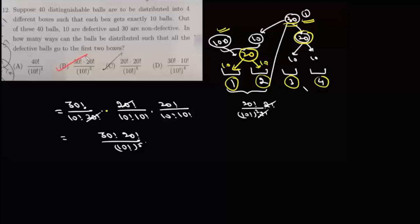In the same way, for boxes 3 and 4, again we can distribute these 20 balls in 10 and 10 as 20! divided by 10! times 10!. And if you want to simplify it, it will come as 30! times 20! upon 10! to the power 5, and that's your option B.